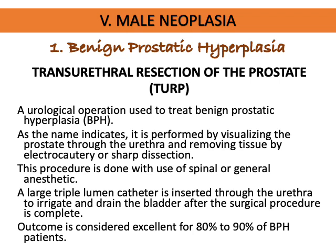TURP or transurethral resection of the prostate is a urological surgery used to treat BPH. It is performed by visualizing the prostate through the urethra and removing tissues by electrocautery or sharp dissection, done under spinal or general anesthesia. A large triple lumen catheter is inserted through the urethra to irrigate and drain the bladder after the surgical procedure is complete.